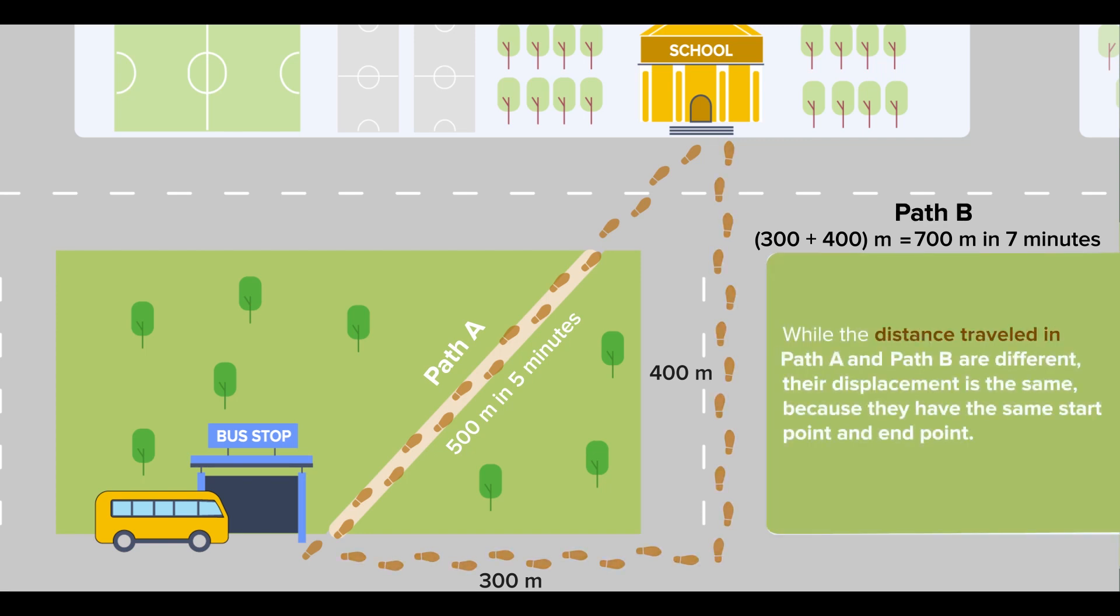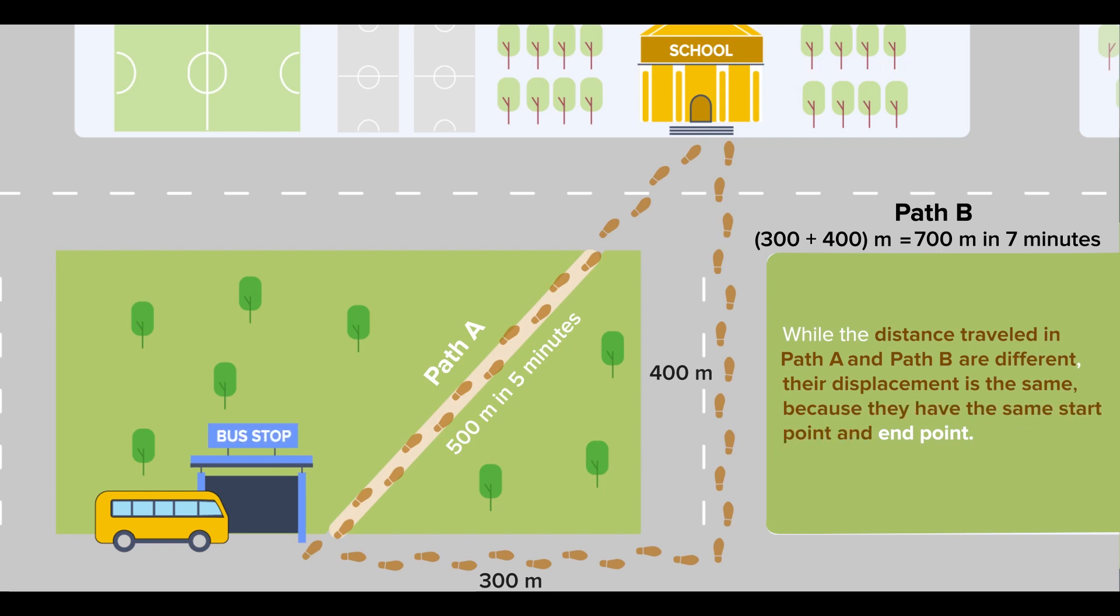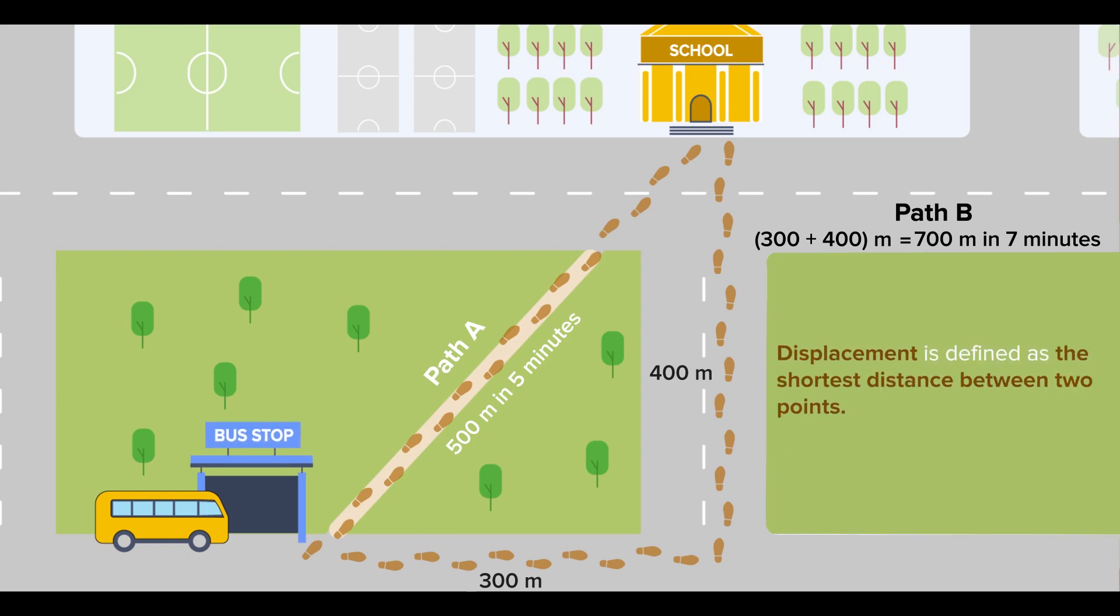So, while the distance travelled in path A and path B are different, their displacement is the same, because they have the same start point and end point. Both start at the bus stop and end in school. Path A is the shortest path between the bus stop and the school, and we call the shortest distance, or path, between two points its displacement.